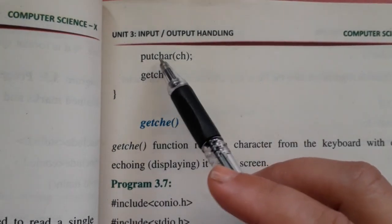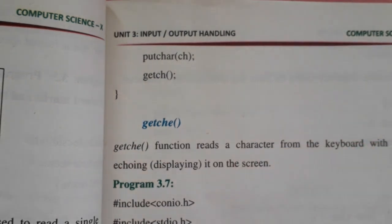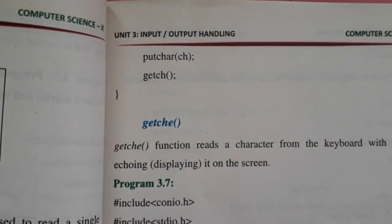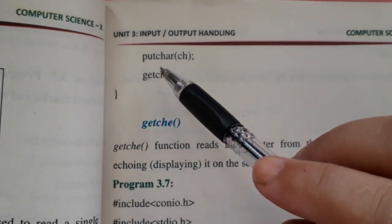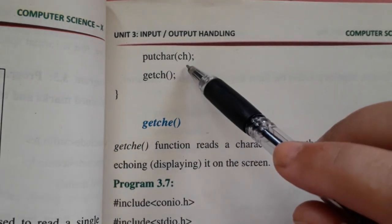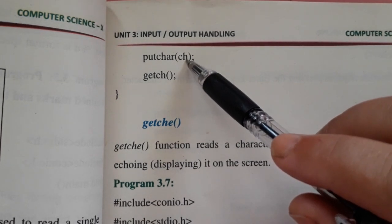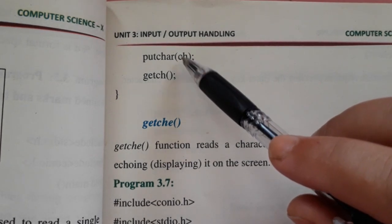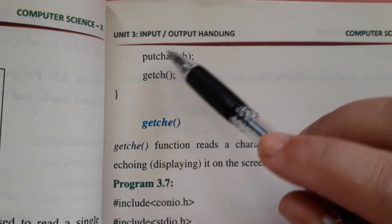Putchar آپ کے پاس وہ output function ہے جس کا main مقصد ہے to output a single character on the screen, to display a single character on the screen۔ اب character کہاں پہ موجود ہے؟ ch میں۔ تو putchar کیا کرے گا؟ ch کو display کرے گا۔